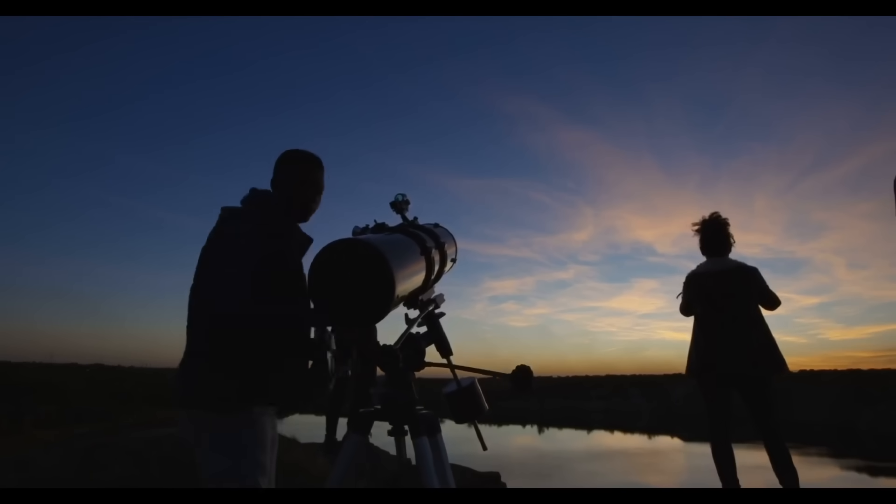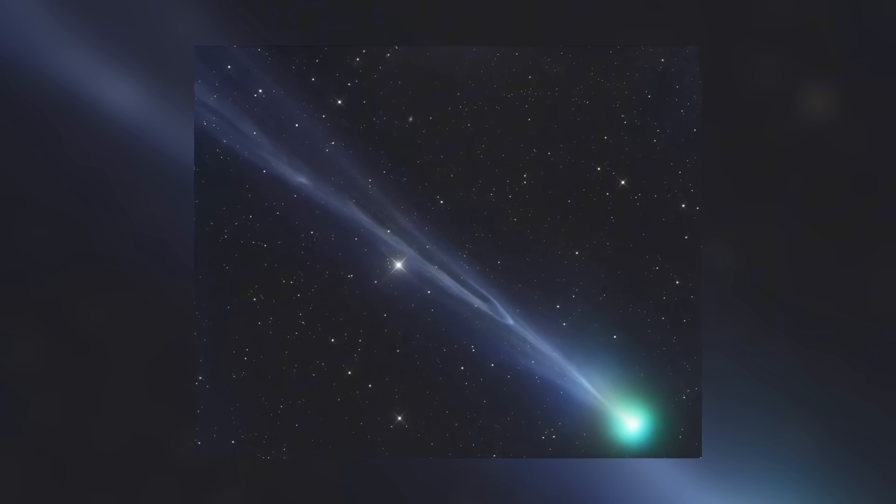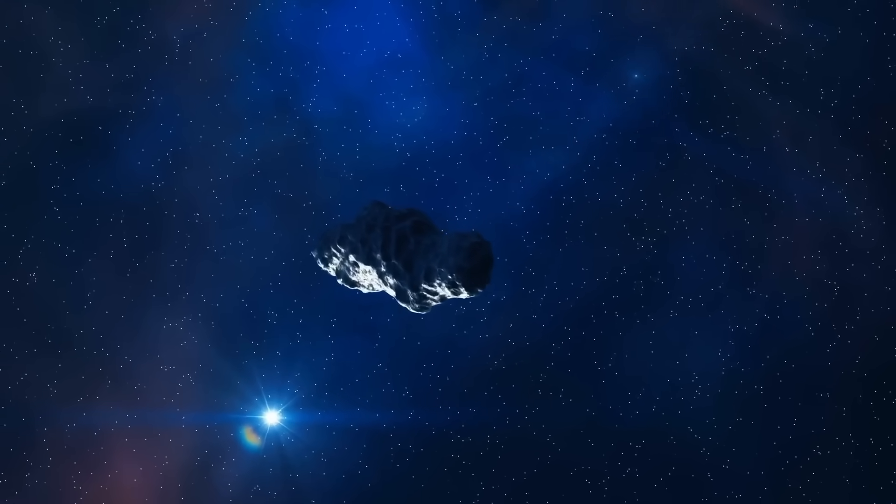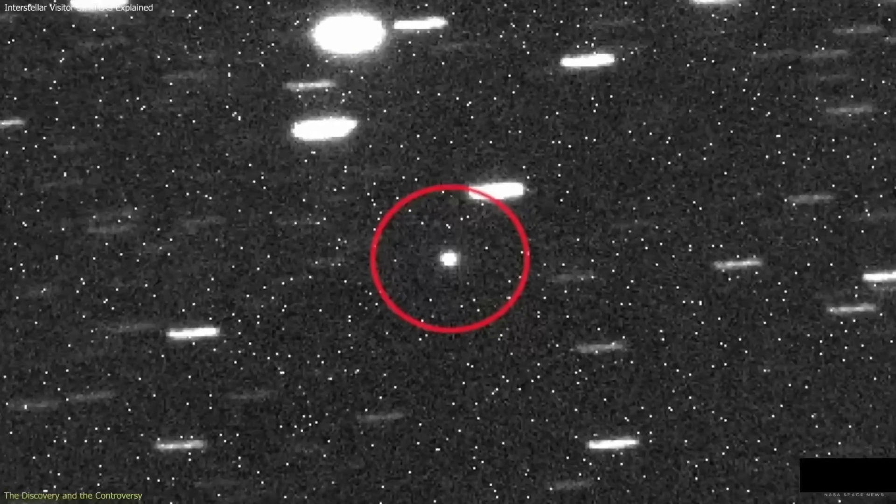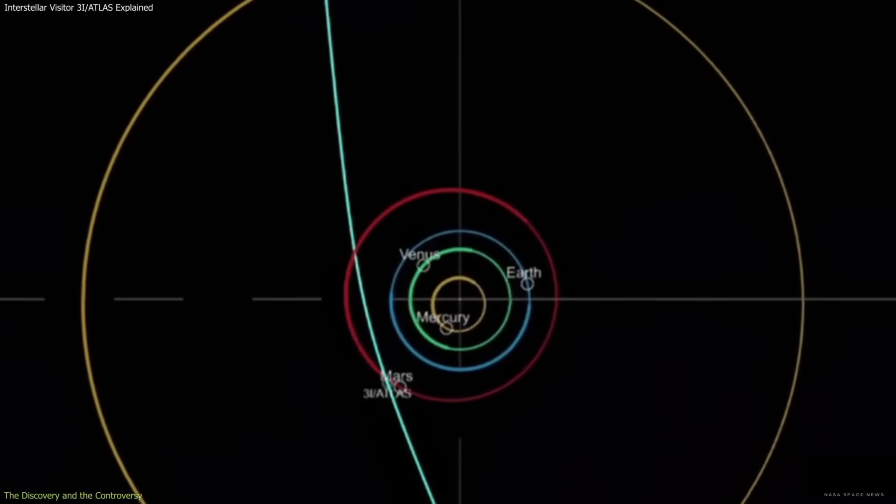Perihelion, the crucible where comets reveal themselves, approaches. Some bodies blossom into cathedrals of light, others crack, dim, and dissolve. A rare few overturn expectations entirely. If 3i Atlas still has cards to play, that is when they will hit the table. The hostile green may be prelude, not crescendo.